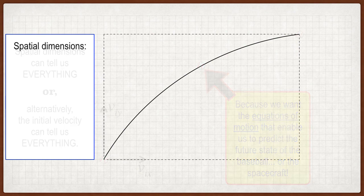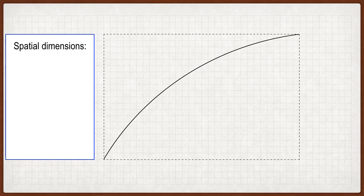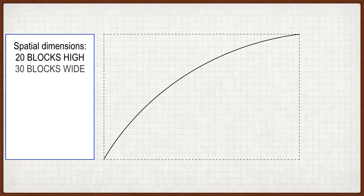Let's start with the spatial dimensions — we can either start with spatial dimensions or initial velocities. We're going to start with spatial dimensions because they're particularly easy. In this graph paper from lecture two, it was 20 blocks tall and 30 blocks wide.